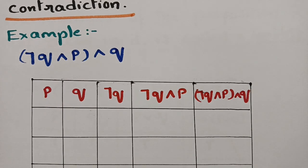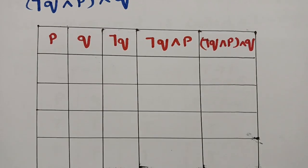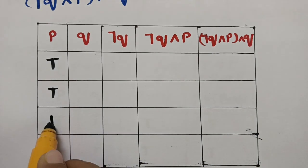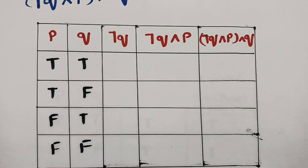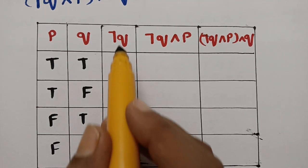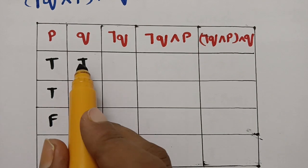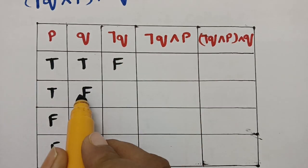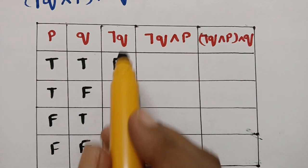Here is the example: ¬q ∧ p ∧ q. We take the same truth values — true, true, false, false for p, and true, false, true, false for q. For the negation of q: if q is true we write false; if false we write true. So ¬q becomes: false, true, false, true.